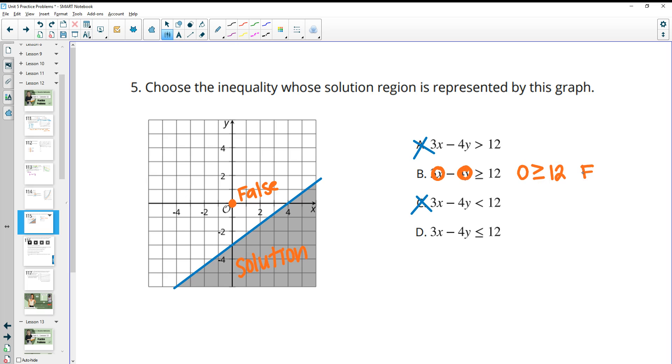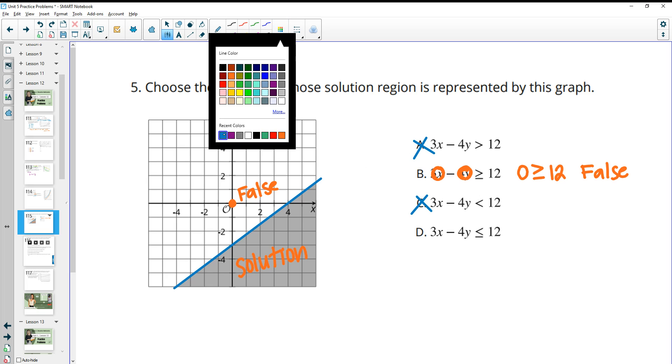And that is a false statement, meaning (0,0) is not a solution to part B. That means that matches our graph, that we want (0,0) to produce a false statement. So B is actually our answer.